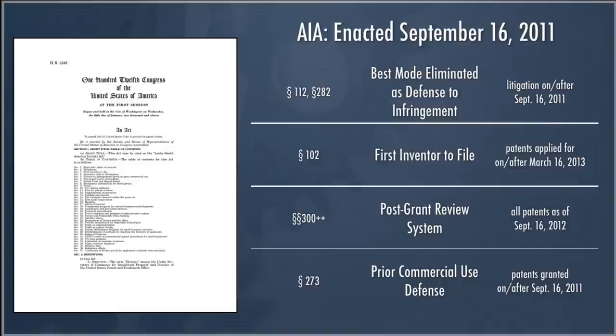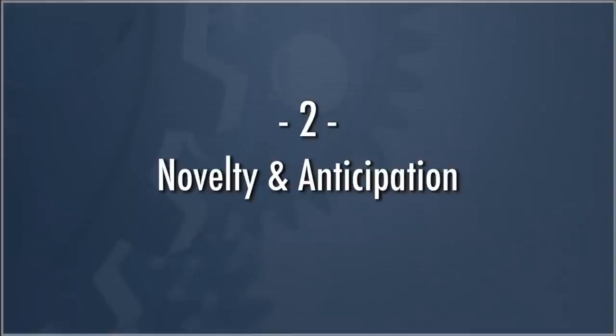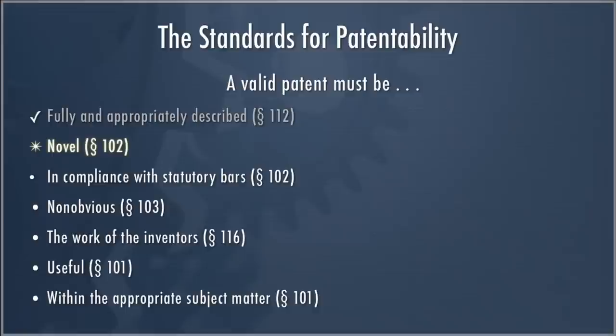We're going to focus on Section 102, which changes a lot of the novelty and priority aspects of the patent system. We are looking at standards for patentability — we've already done Section 112, which requires a patent be fully and appropriately described. Now we're diving into the requirement that patents must be novel, and we'll do the rest of the patentability standards later in the course.